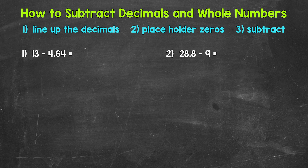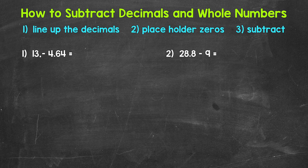Let's jump into number one, where we have 13 minus 4 and 64 hundredths. Our first step is to set this problem up by lining up the decimals. Now we have a whole number here — 13. Remember, the decimal point goes to the right of the ones place, to the right of the whole number. So we can put a decimal point right here for 13 to use to line this problem up. Typically if we just have a whole number, we write it without a decimal point, but here we are using it to line up the problem.